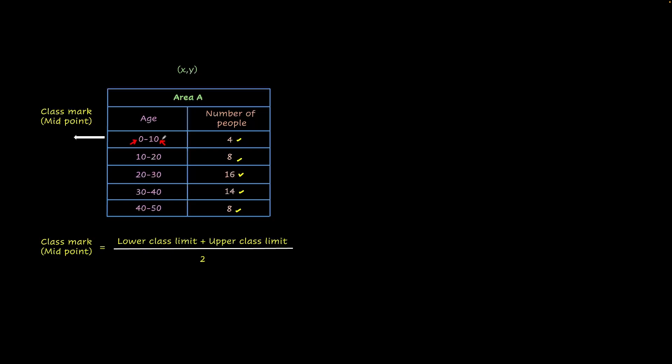Now let's do that. So what is 0 plus 10? 10. 10 by 2 is 5. That's our first point. And then second point would be 15. Similarly, third point would be 25, and the fourth point would be 35, and the fifth point would be 45. And there we have our coordinates. So our coordinates would be 5, 4; 15, 8; 25, 16; 35, 14; and 45, 8. These are all our coordinates.